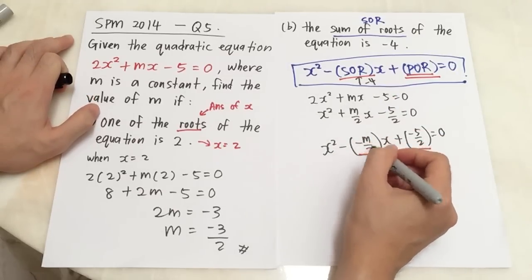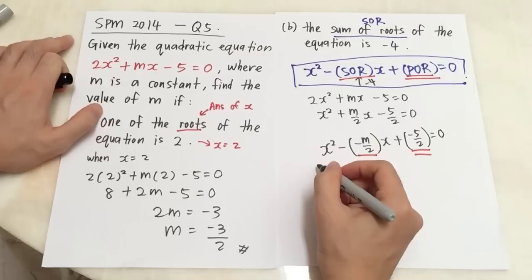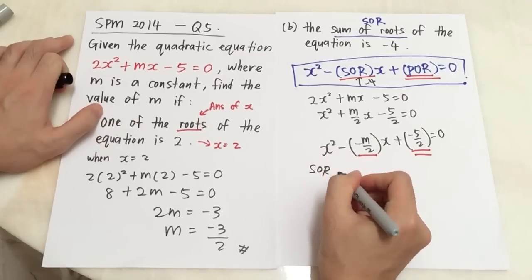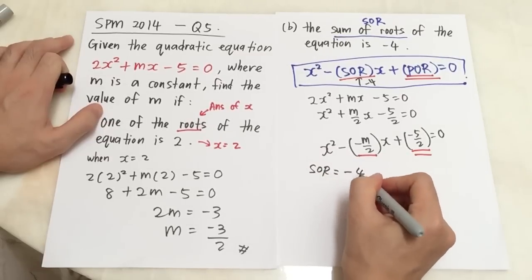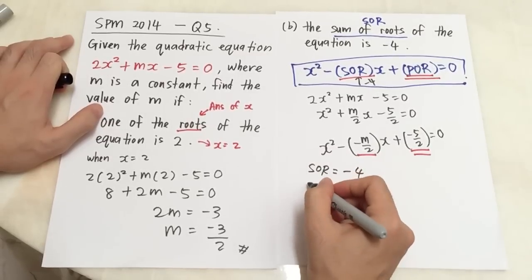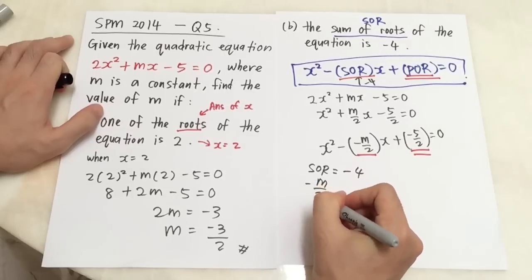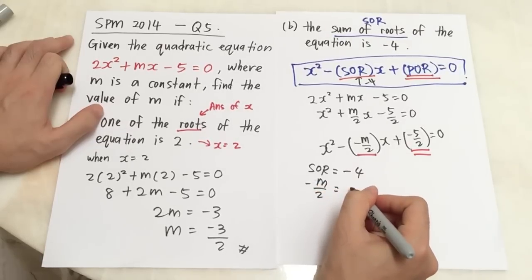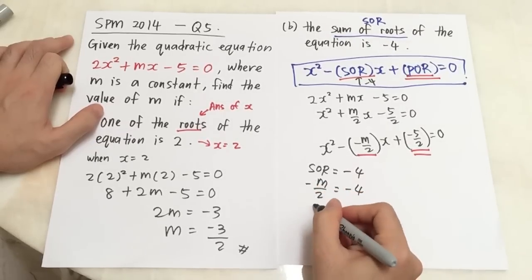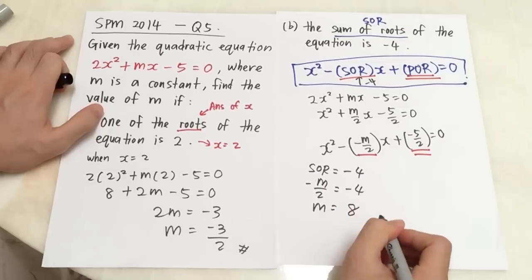However in this case the product of root is not so important. We're going to use the information of sum of root. Sum of root is negative 4. That means this one will equal to negative 4. So my sum of root in my own equation here is negative m over 2. Negative m over 2 equals to negative 4. So m equals to 8. That's all.